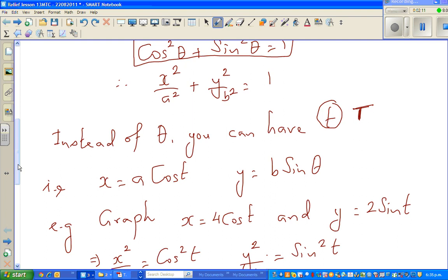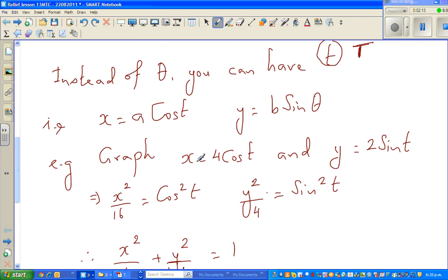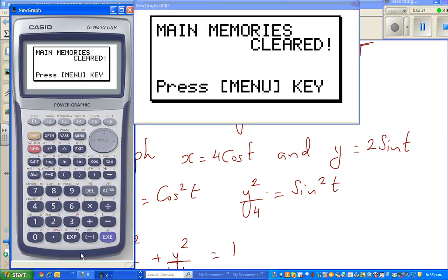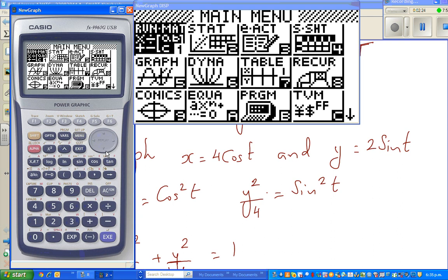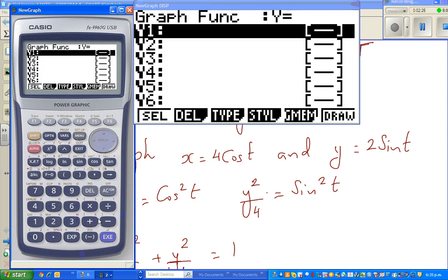So I've done one simple example: x is equal to 4 cos t and y is equal to 2 sin t. I'll first show you on a graphic calculator how to draw it. So you go to menu, go to graph and then go to type. Now this is parametric. F3 is for parametric.